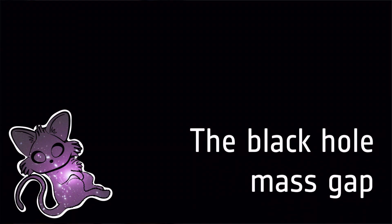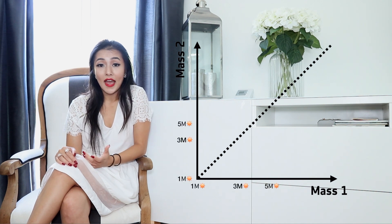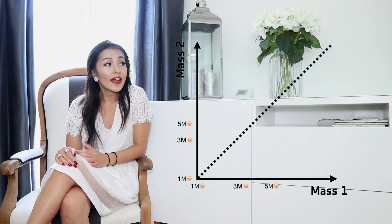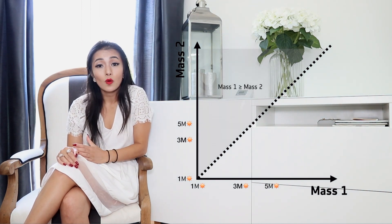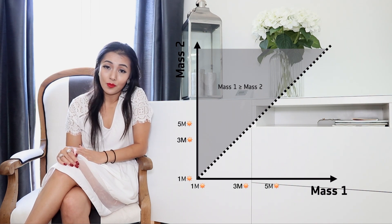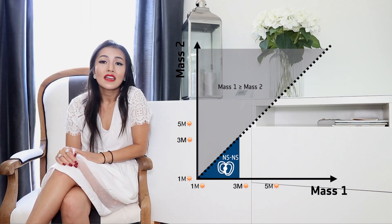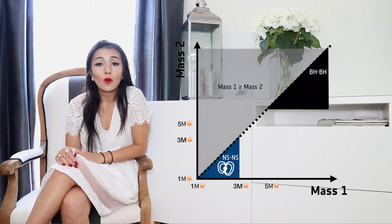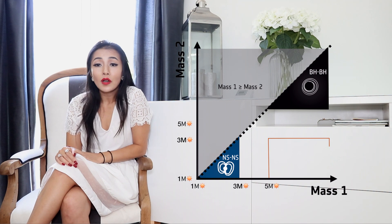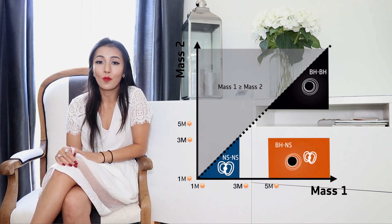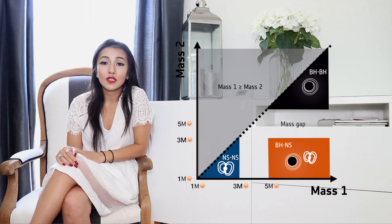This classification map tells us what kind of objects are merging based on the calculation of their masses. There shouldn't be anything above the diagonal line, because the mass of the first object is always larger than the mass of the second. In the bottom left corner we find neutron star–neutron star mergers, in the top right corner black hole–black hole mergers, and in the bottom right corner neutron star–black hole mergers. If the mass gap is real, we shouldn't find anything in those mass gap regions.